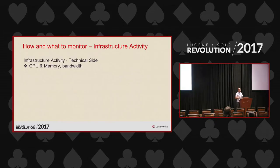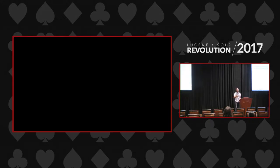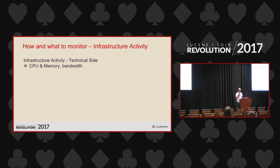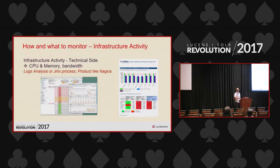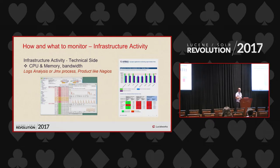Now that you understand you need a search strategy, you need to rethink what you want to monitor. You can monitor things that are very easy — CPU, bandwidth — using a product like Nagios. That gives you simple custom reports showing memory usage, CPU usage, bandwidth usage. It's important but easy to get, and not the main subject today.